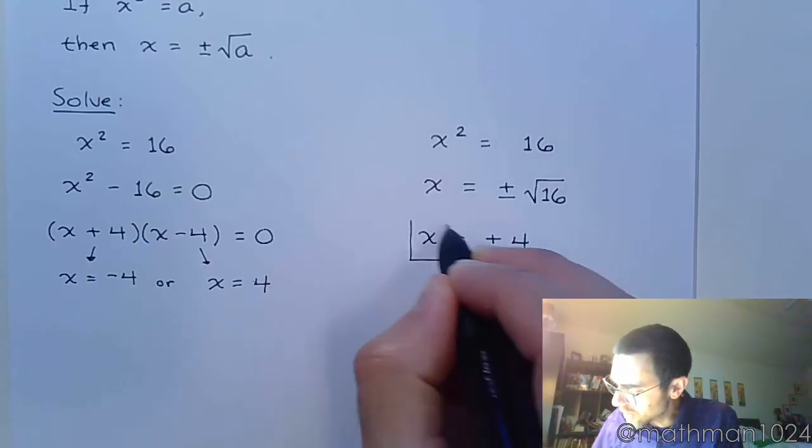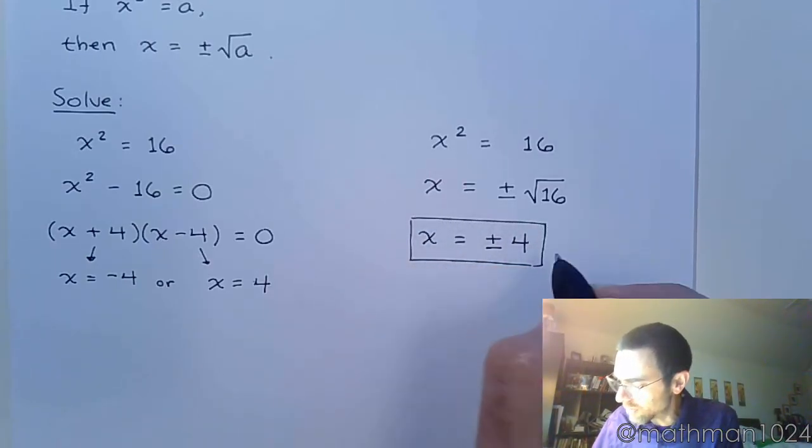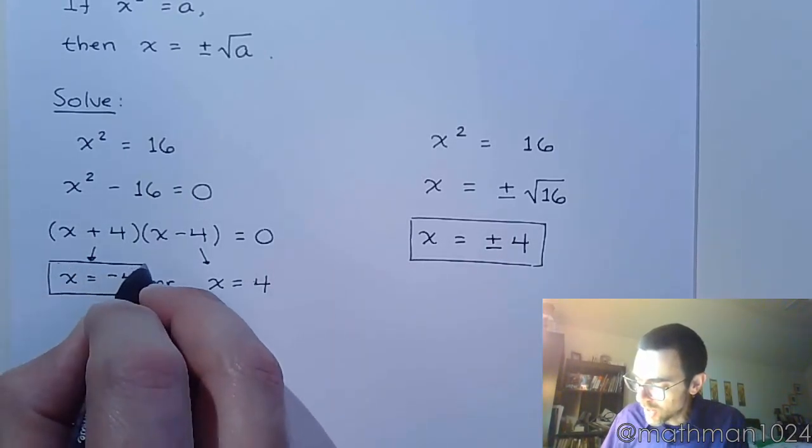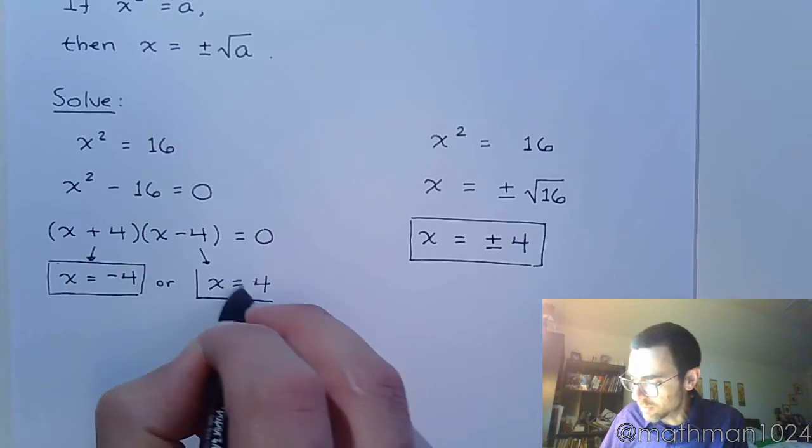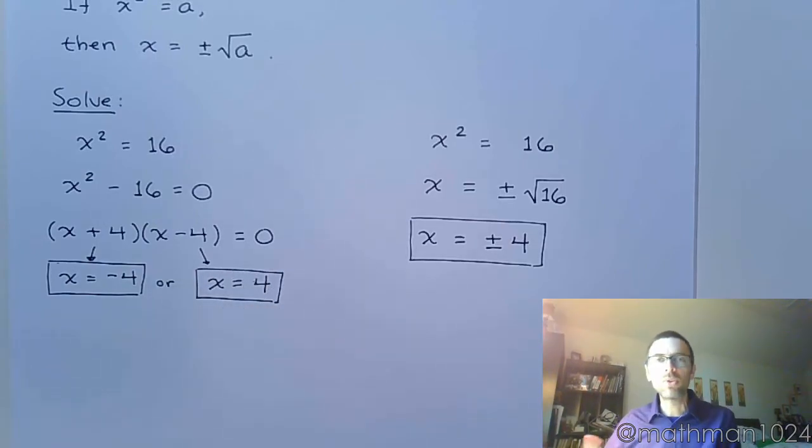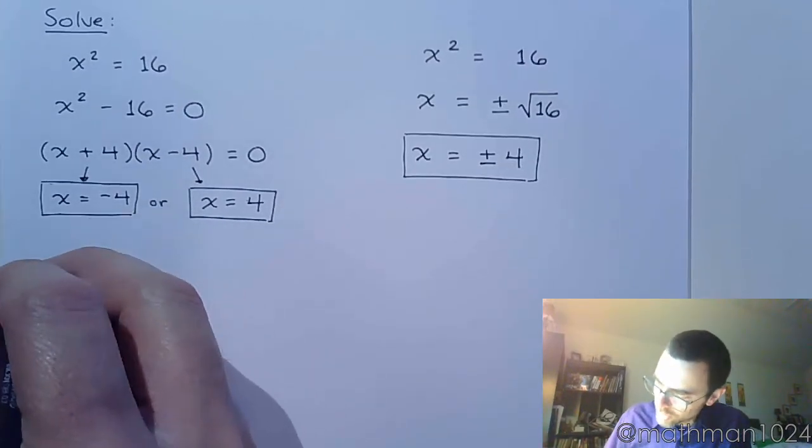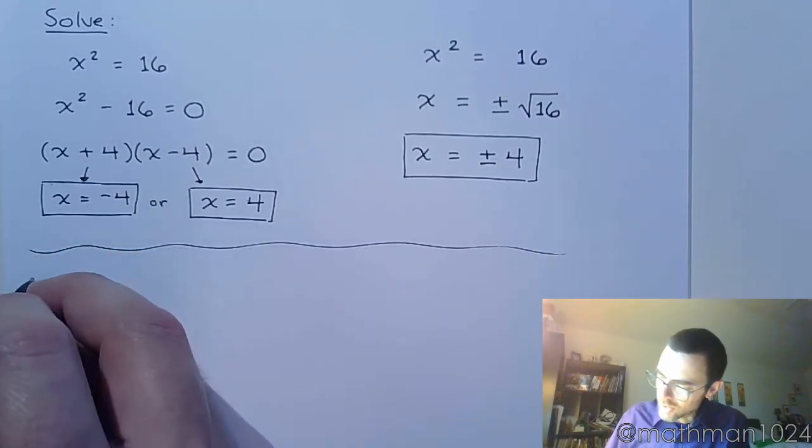You can say x equals plus or minus 4, or you can say x equals negative 4 or x equals positive 4. Both of these are going to be valid. So really no big deal there, right? Well, let's take a look at this next example.